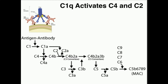When C1 becomes activated, the first protein it's going to activate is C4. Complement proteins start out in the zymogen form, meaning they're inactive, and they have two parts generally — an A part and a B part. B stands for bound, meaning whenever a serine protease complement protein cuts the inactive complement protein, it cuts it into an A part and a B part. The B part remains bound and stays with the complex; the A part floats away. So when C1 becomes activated, it cuts C4 into C4A, which floats away, and C4B, which stays bound.